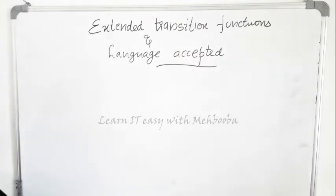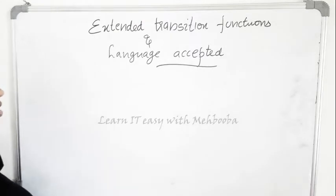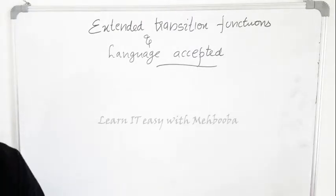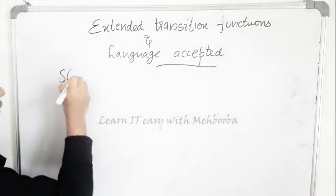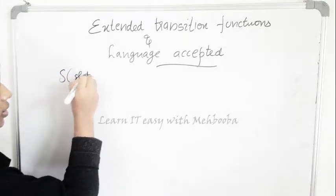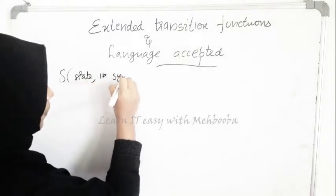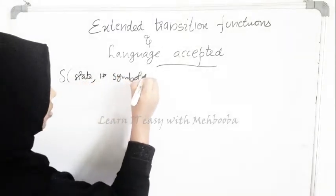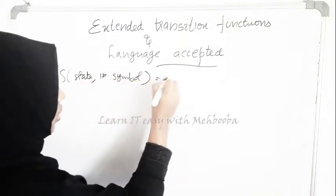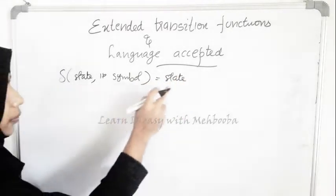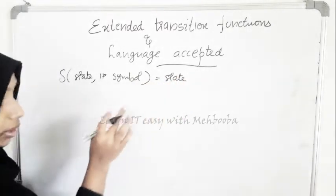In the previous videos we have seen that a transition function is denoted by the letter delta, and it takes as its arguments a state and an input symbol, and outputs another state.